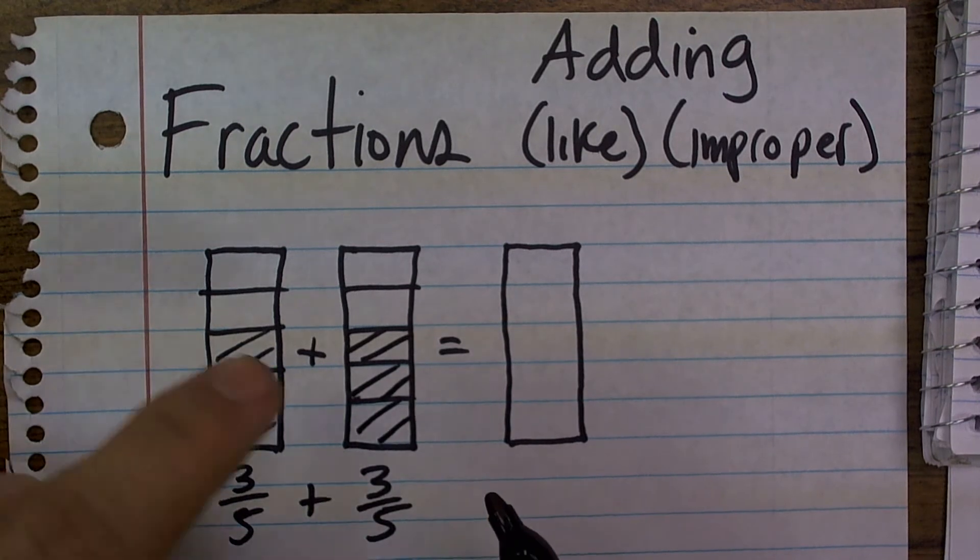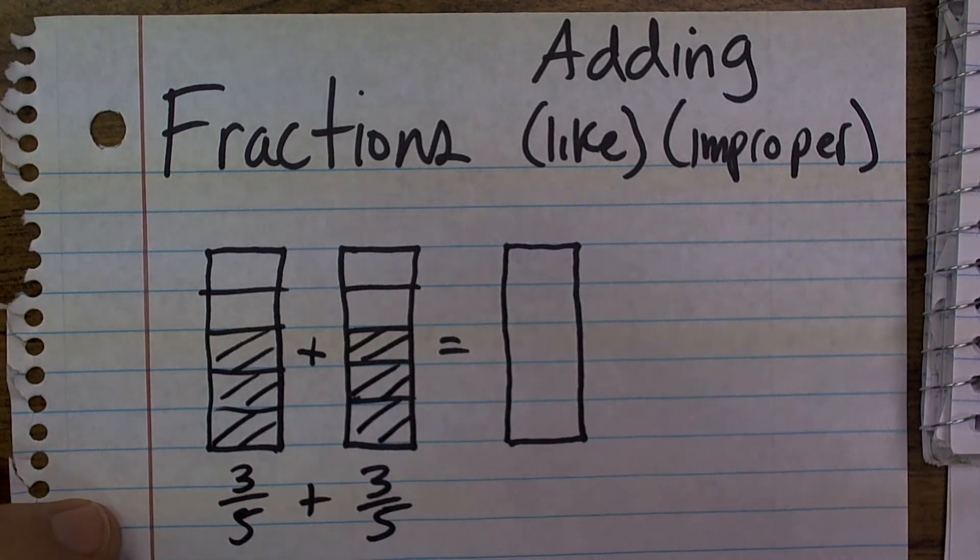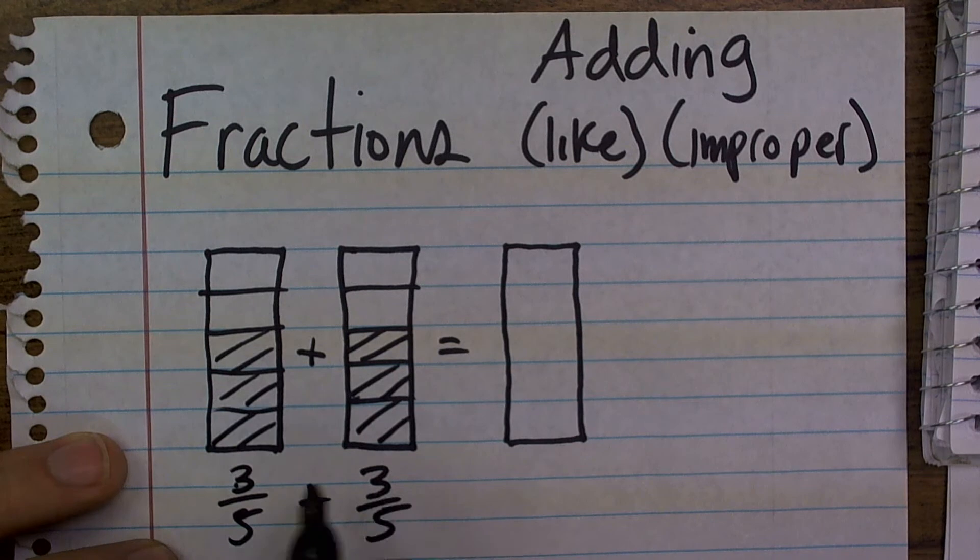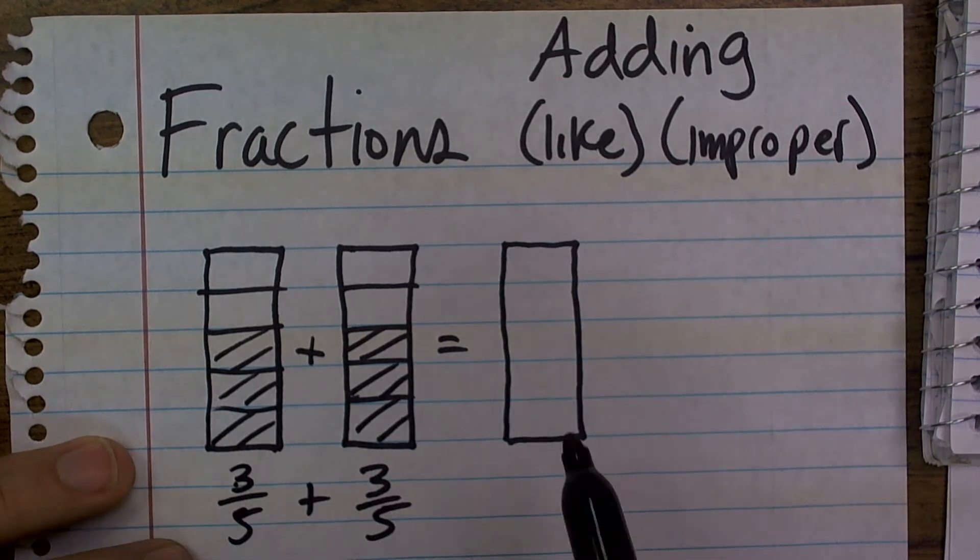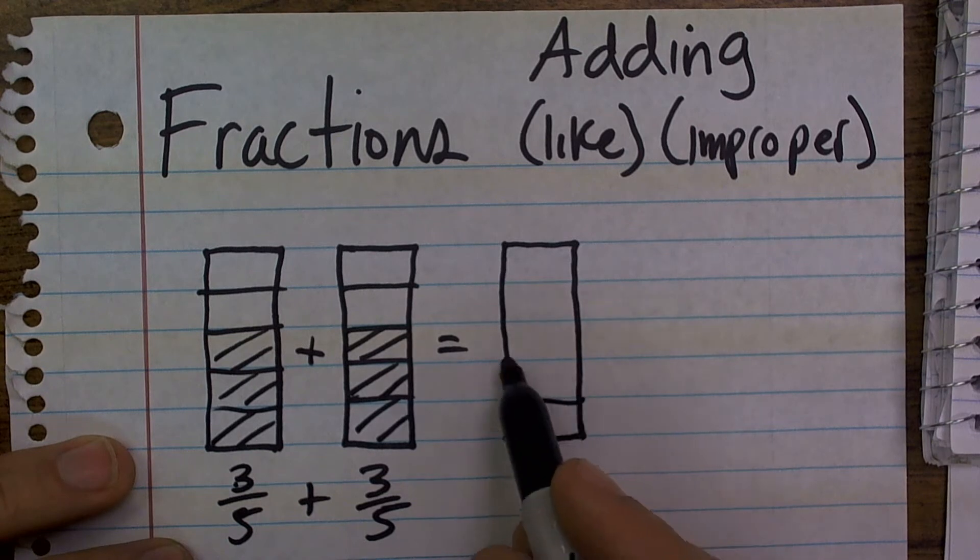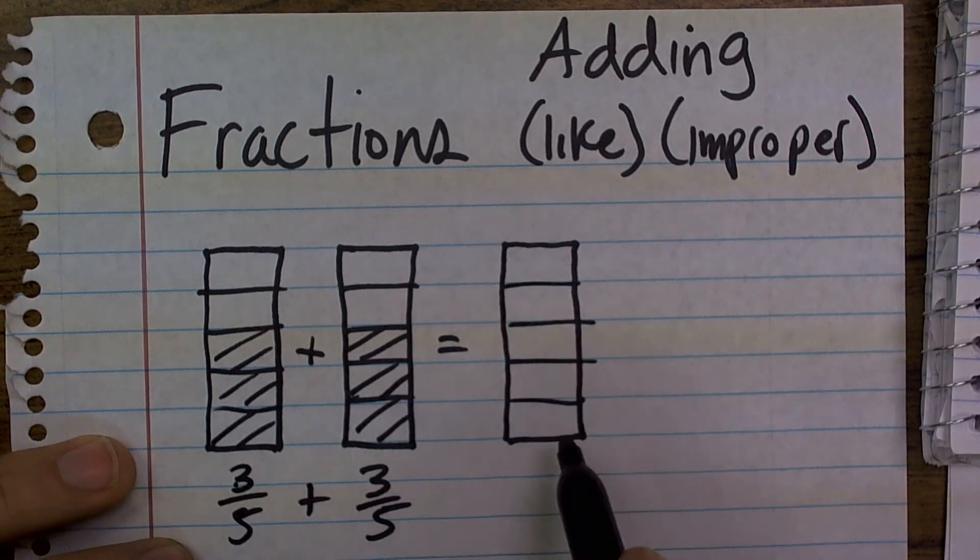Okay, so I want to add 3 fifths plus 3 fifths. Now remember, it's very important for us to only add our numerators and then keep our denominators the same. So by keeping our denominator the same, what you'll notice is this is still going to be fifths.